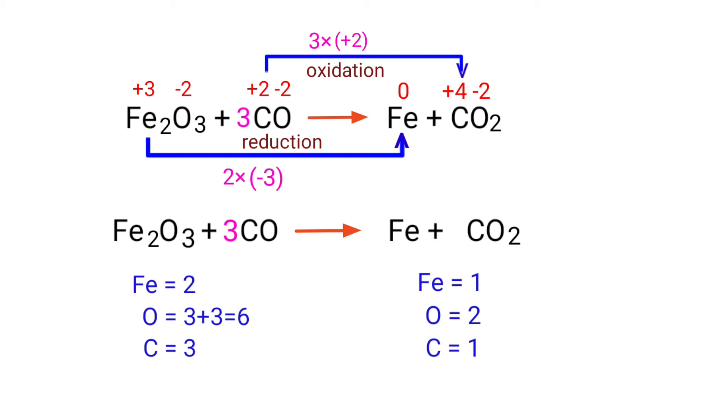In this equation we need to balance the carbon and oxygen atoms first. To do this we need to put a coefficient of 3 in front of CO2. The carbon and oxygen atoms are balanced. Now we need to balance the iron atoms. To do this we need to put a coefficient of 2 in front of Fe.